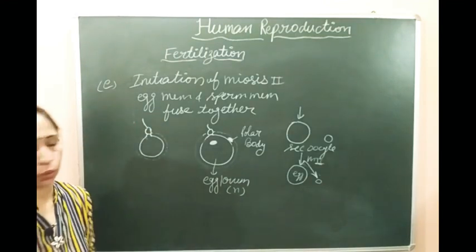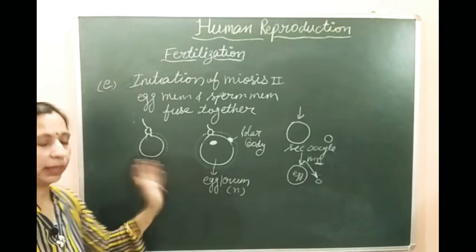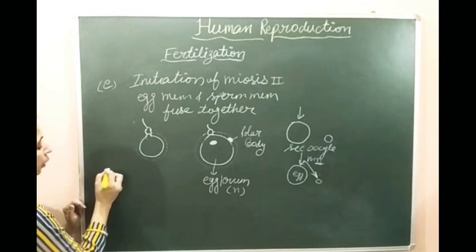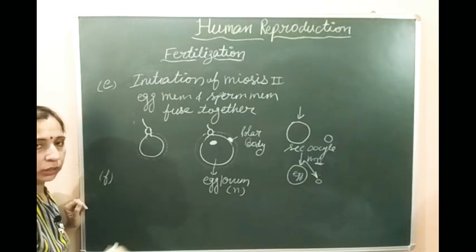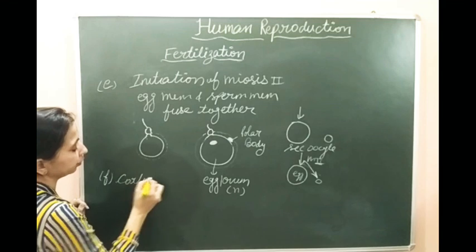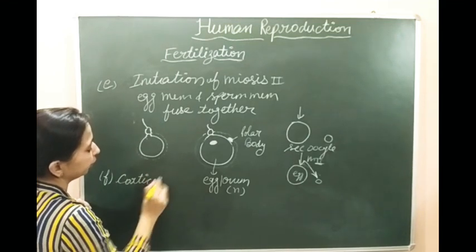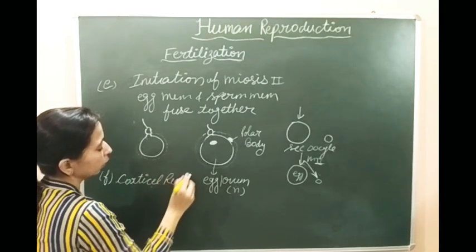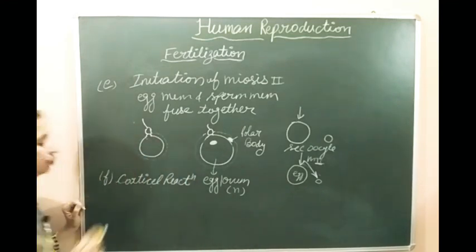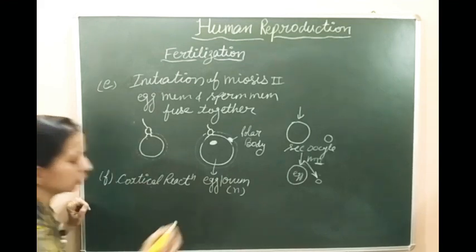After this meiosis two, simultaneously another process is also happening. This reaction or process is known as the cortical reaction. What is this cortical reaction and what is happening inside it?